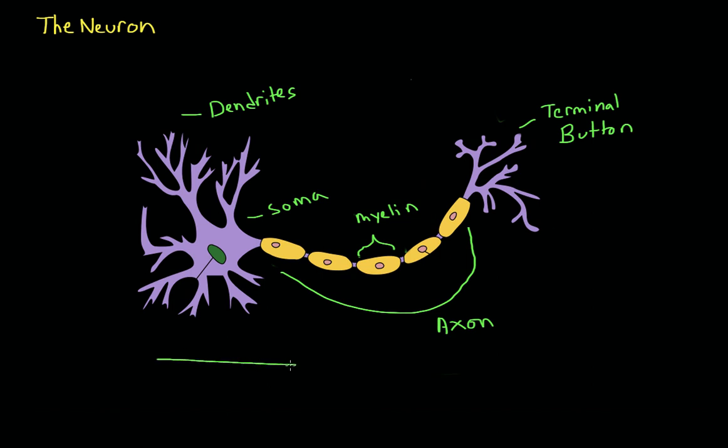So in its entirety, with the message going from one side to the other, we see that the messages are received by the dendrites and they're summed in the soma. The message is then transported down the axon and sent to other cells through the terminal buttons.